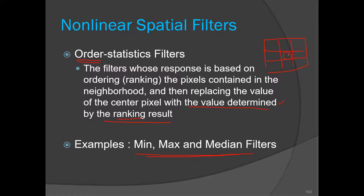If you replace the value of the center pixel by the minimum value of the nine pixels, that is known as a min filter. If you replace the value of the center pixel by the maximum value, that is known as a max filter. And if you replace the value of the center pixel by the median of these nine values, that is known as a median filter. These filters are extremely powerful to reduce impulse noise, which is also known as salt-and-pepper noise.